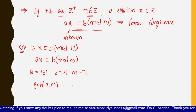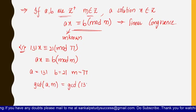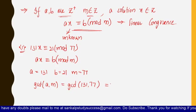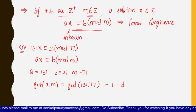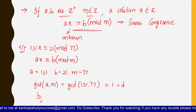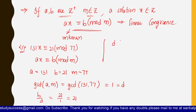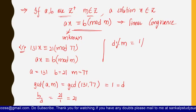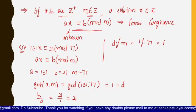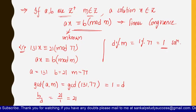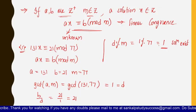The first step is to find gcd(a, m), that is gcd(131, 77), which equals 1. We consider this as the value d. Now find b/d, which is 21/1 = 21. Then find d mod m, which is 1 mod 77 = 1.